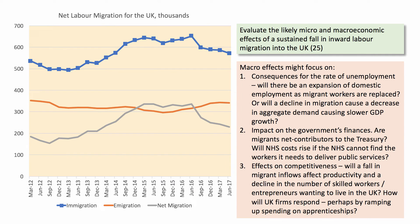Macro effects — you've got a much bigger canvas to write about, so much more you can discuss. If there's a fall in migration, what will be the possible consequences for the unemployment rate? We have unemployment at the moment of 4.2%. How much further can it fall — would it go lower if migration flows fell? Would there be an expansion of domestic workers as migrant workers are replaced? Or will the fall in migration inflows actually cause a slower rate of growth and a lower level of aggregate demand for goods and services? There's a lot of uncertainty, of course.